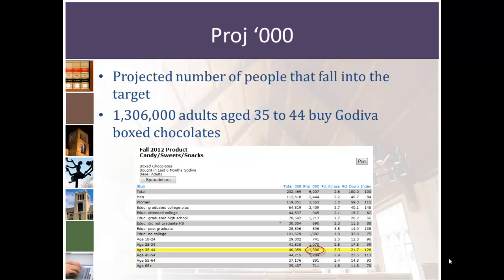The next column, Projected Thousand, is the projected or estimated number of people that match our target, again in thousands. For people aged 35 to 44, it's estimated that 1,306,000 of them purchased Godiva box chocolates.